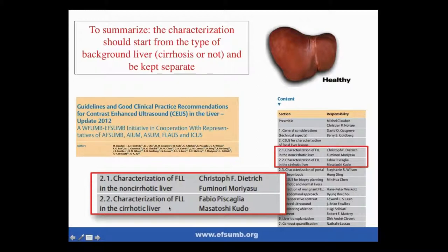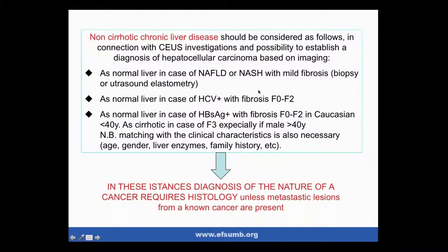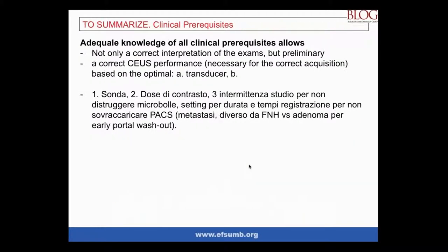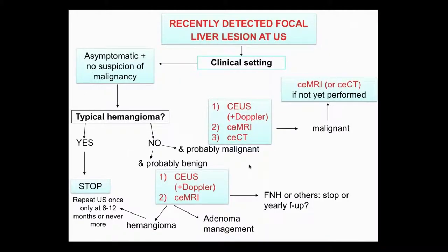Only in cirrhotic liver is it possible to establish a final diagnosis by imaging. Before starting the examination, we must know whether there is mild or severe fibrosis. Ultrasound elastometry is very important to this end. If the patient does not have severe fibrosis or cirrhosis and has hepatitis C, we follow the flowchart for lesions not at risk of hepatocellular carcinoma. Only hepatitis B with severe fibrosis or cirrhosis confers risk of hepatocellular carcinoma. The clinical background for focal liver lesions is mandatory to be known.